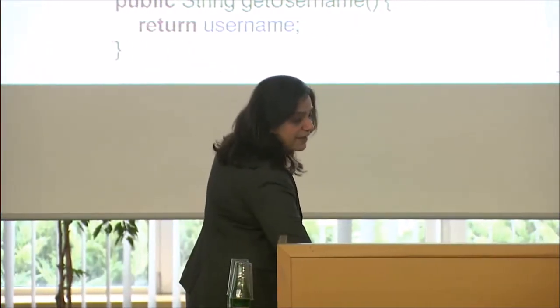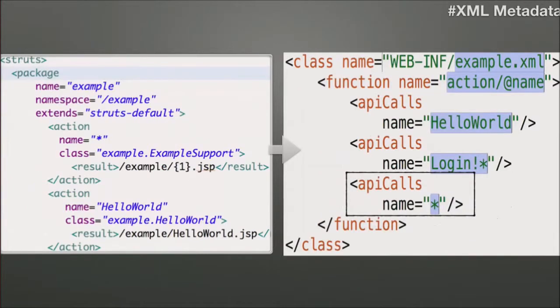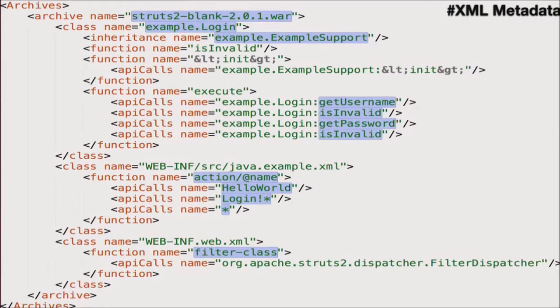Just to show how this maps into XML — taking a small snapshot of a class file — I'm picking up the namespace, the class name, the inheritance and its namespace, all the functions, and the APIs defined within it. Similarly, for XML, using a simple Struts MVC-based application, I'm picking up its action mappings — which is essentially a controller — and how all the action mappings are represented as an XML fragment. Keep an eye on that star action mapping; it's going to get interesting very shortly.